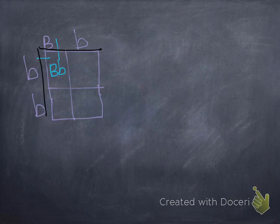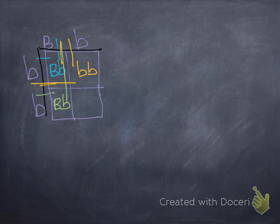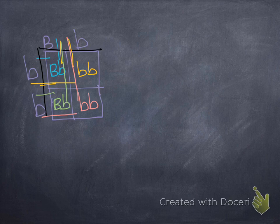We brought the big B down, little b across, so that gave us big B, little b. And we brought the big B down, little b across, and that gave us big B, little b. Then we did little b across and little b down and that gave us little b, little b. And we did the little b down and we did little b all the way across and that gave us little b, little b.